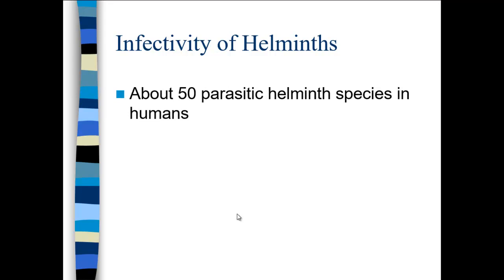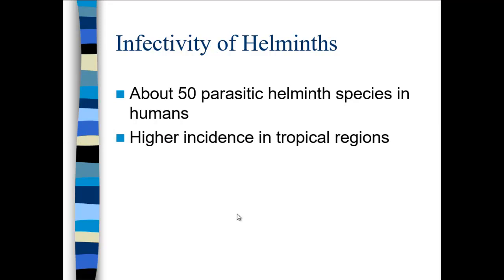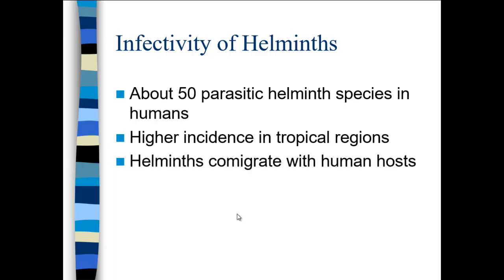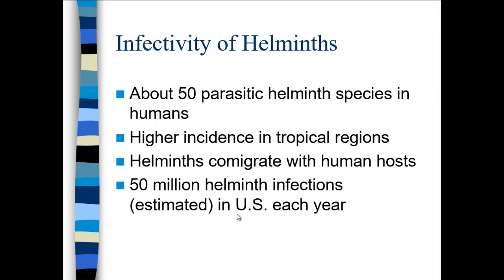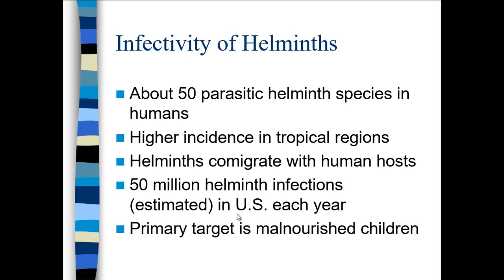There are about 50 parasitic helminth species known to infect humans. Helminths do not survive well in cold environments, so you see them in tropical regions. They co-migrate with human hosts — if an infected person moves to a colder region, an outbreak can occur there. There are about 50 million helminth infections per year, roughly one sixth of the world population. The primary target is malnourished children, who are also immunocompromised due to poor diet.